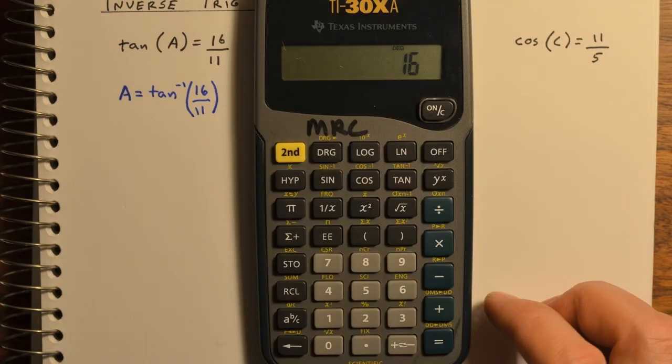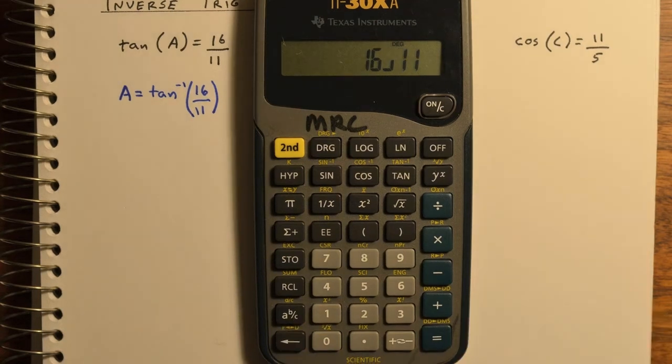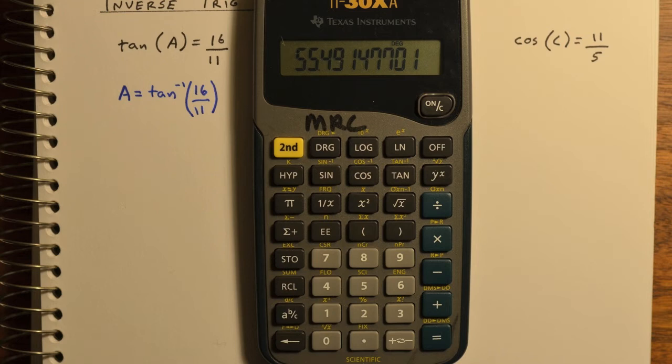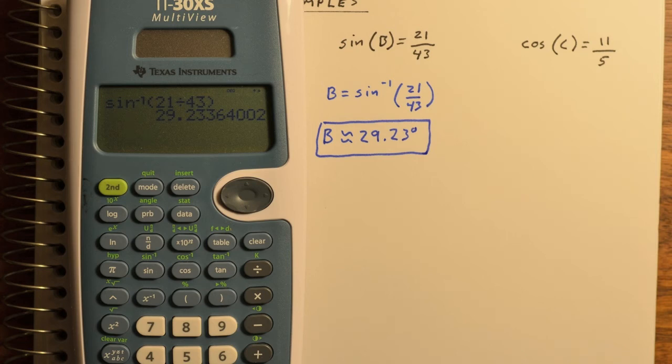With the TI-30, you'll want to type in 16 elevenths first, and then take the inverse tangent of that. The next example, the sine of B. So therefore, B is the inverse sine of 21 forty-thirds, which is 29.23 degrees.